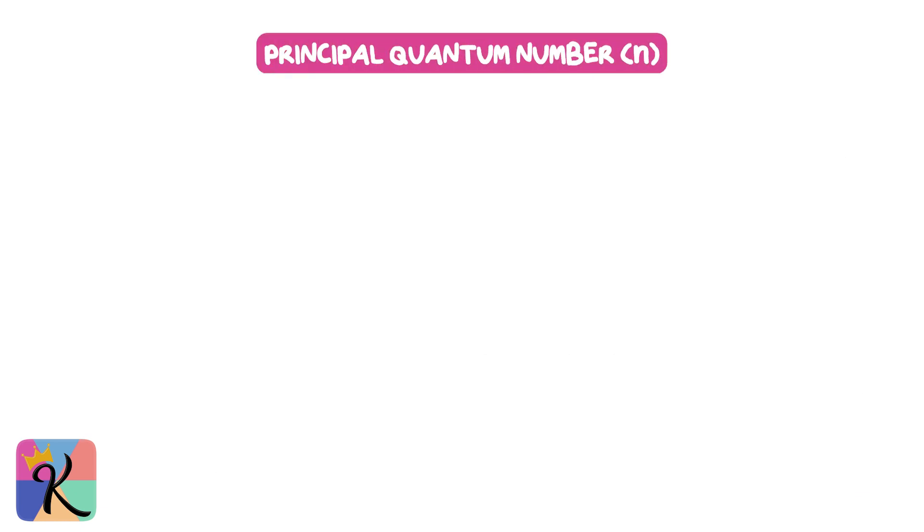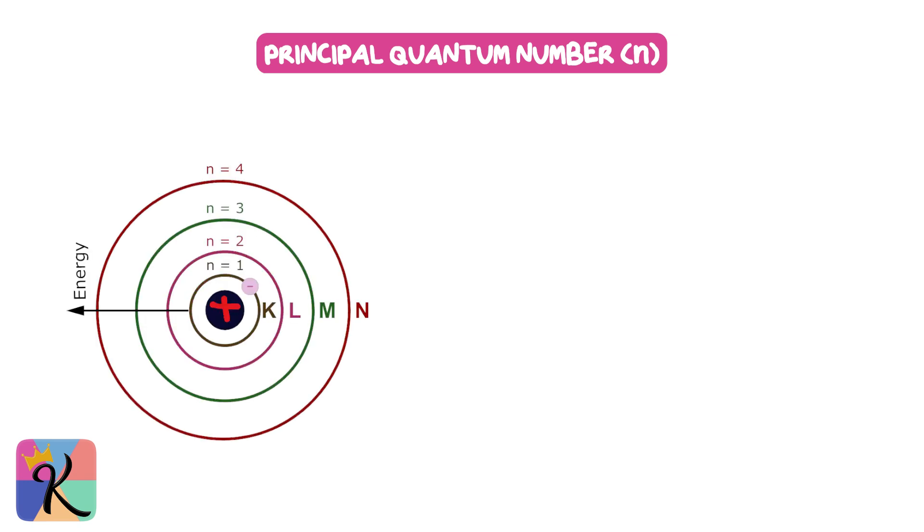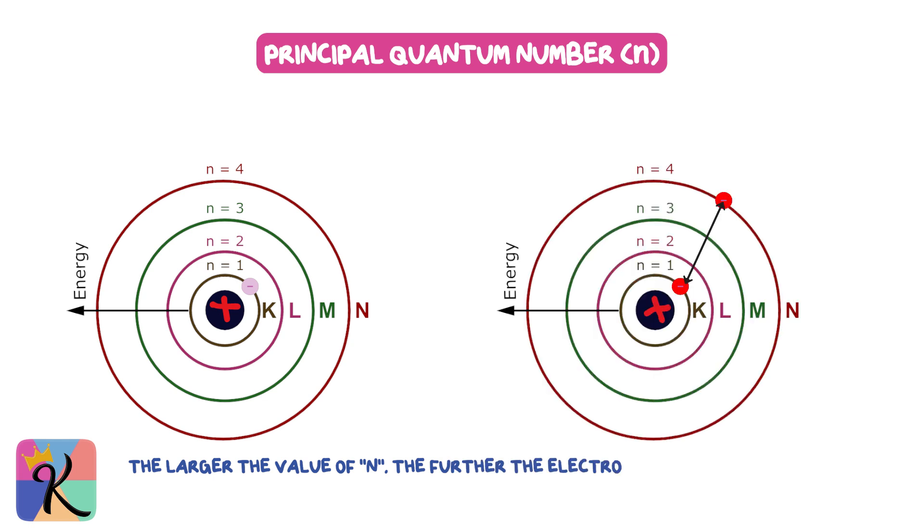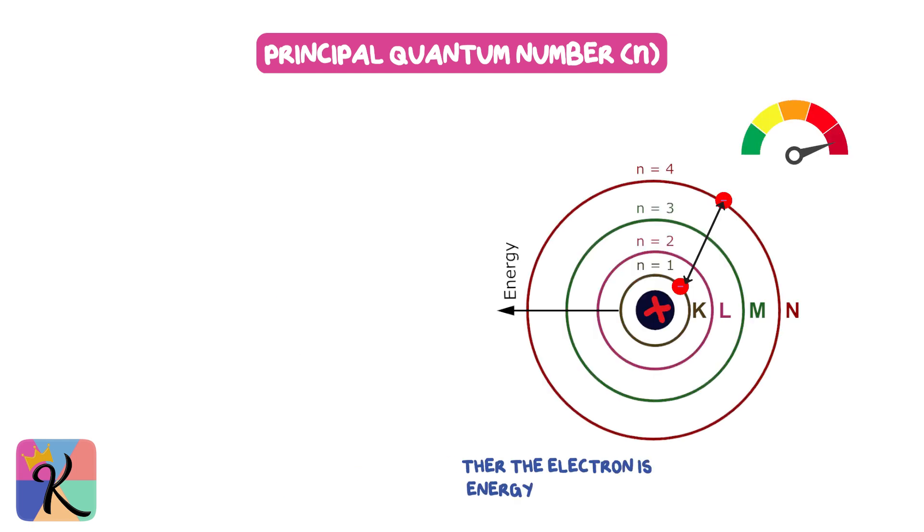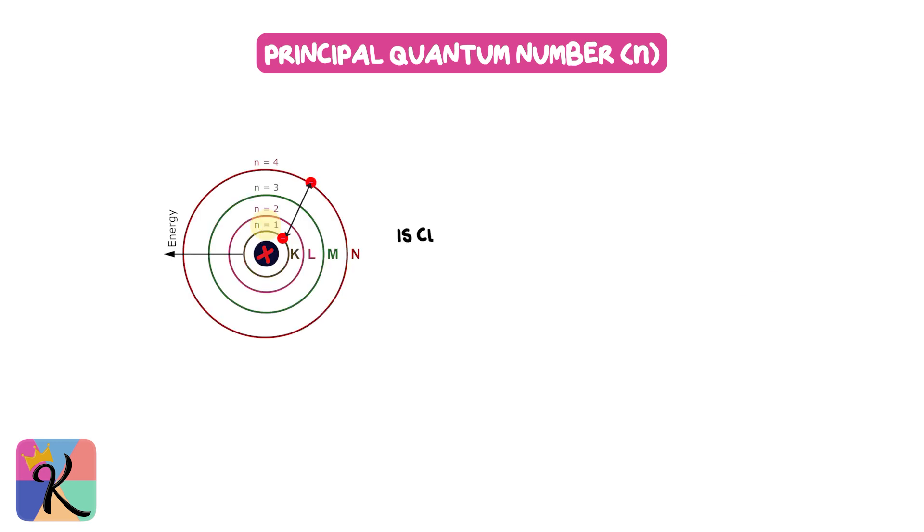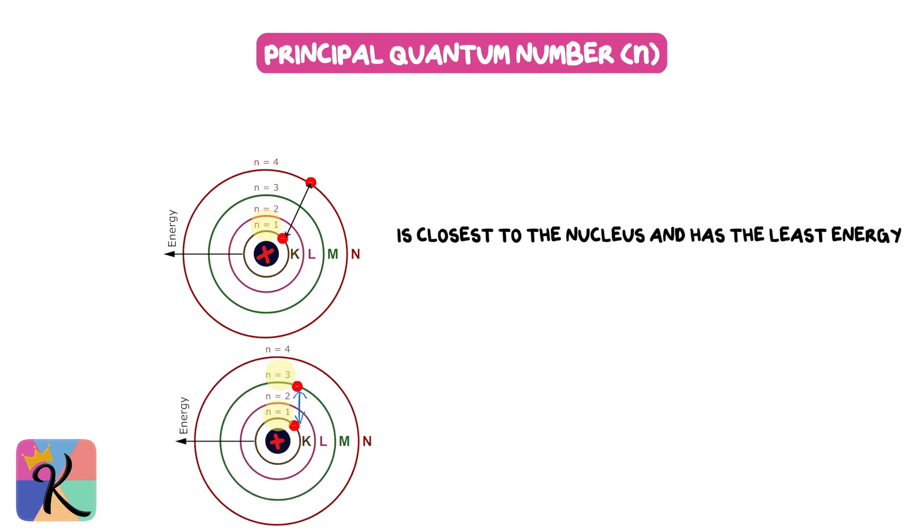The principal quantum number (n) represents the energy level of an electron. The larger the value of n, the further the electron is from the nucleus, and the higher its energy. For example, an electron in the n=1 shell is closest to the nucleus and has the least energy, while an electron in the n=3 shell is further out, occupying a larger, higher energy orbital.